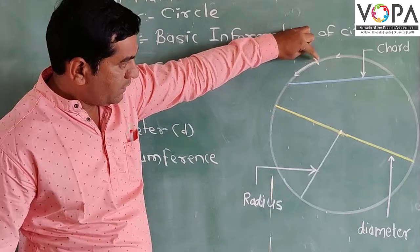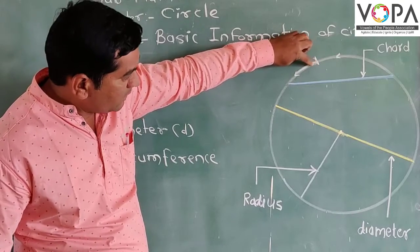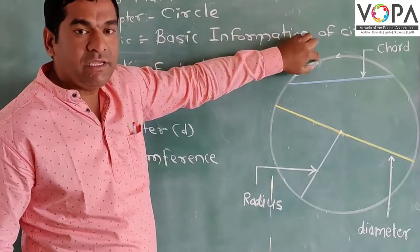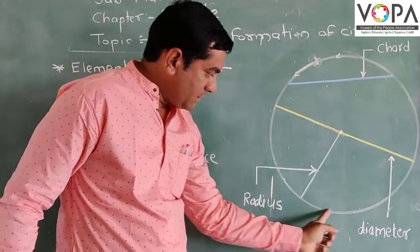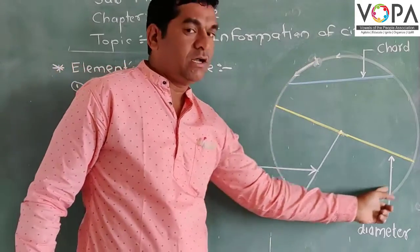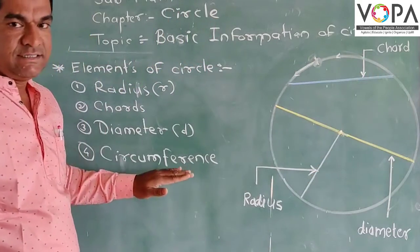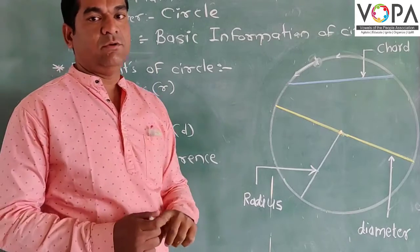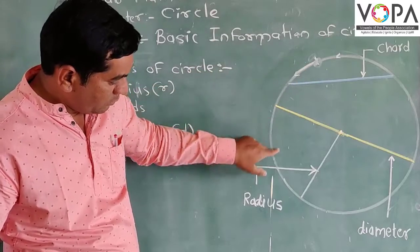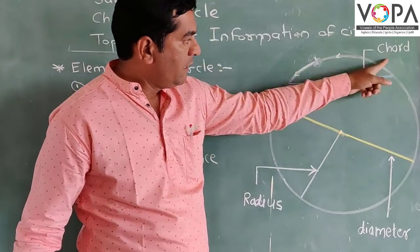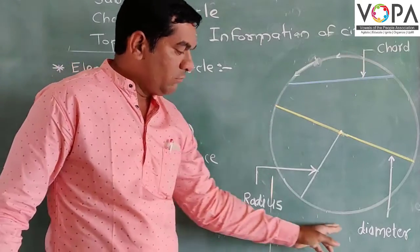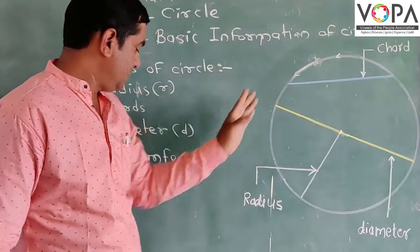Next is the circumference. Take this example: imagine you are standing at a point on a circle, you move around it and come back to the same point. That complete one rotation is called the circumference.